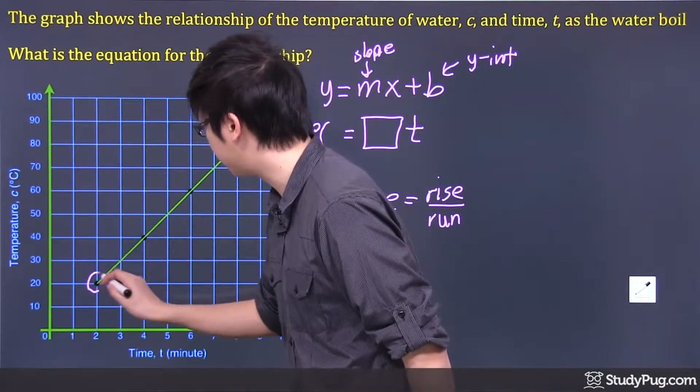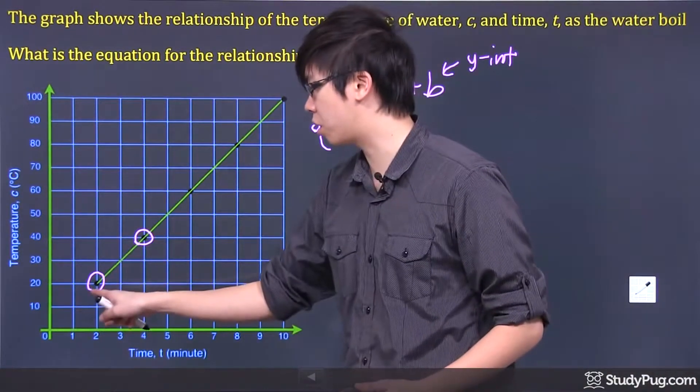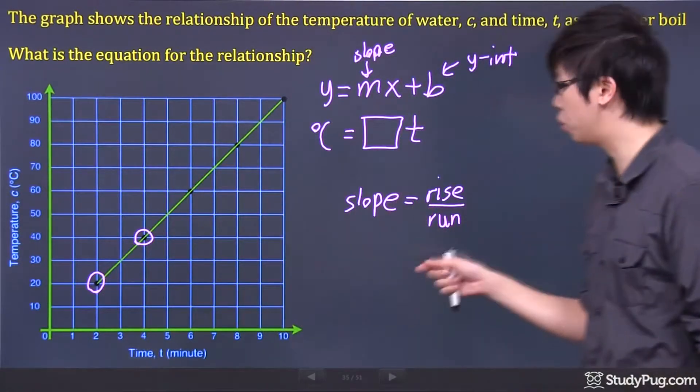You can pick two points. Let's say I pick these two points right here. Now just ask yourself, how can I go from here to here? Well, if I'm just using the rise over run, which is the slope, which is the m over here.